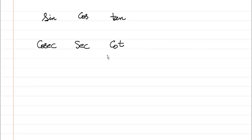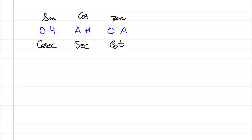So: sine, cosine, tangent, cosecant, secant, and cotangent. And then we need to learn this particular mnemonic: 'Old Harry and his old aunt.' We need to learn this — 'Old Harry and his old aunt.'